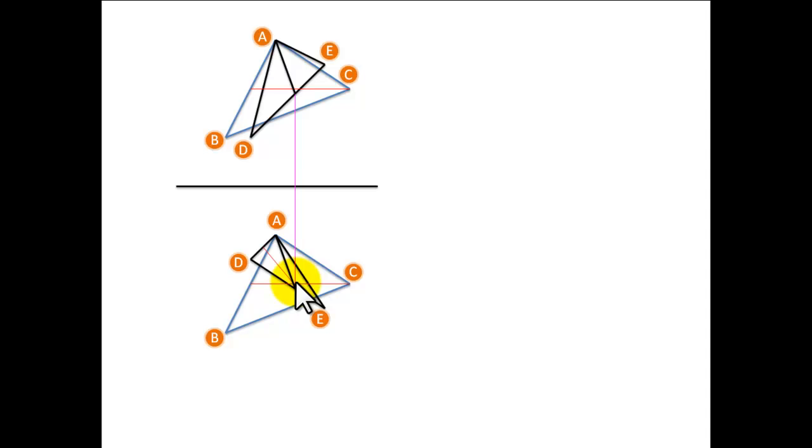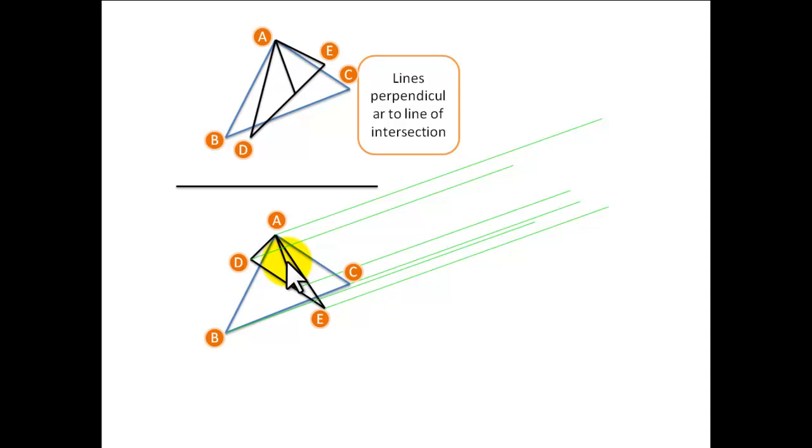So to find the true length, we need to find an auxiliary elevation perpendicular to the line of intersection. So bring up lines perpendicular to the line of intersection. Get an X and Y one and find them in our elevation.